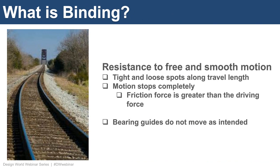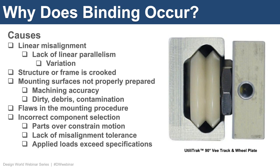So what is binding? Binding is any resistance to free and smooth motion. It can be experienced with tight and loose spots along the travel length, or the motion may stop completely. This happens when the friction force is greater than the driving force and the bearing guides do not move as intended. There are several different causes of why binding occurs. The number one reason is linear misalignment — the track is not very parallel when mounted. There can also be variation of the mounting surface over its length when the structure or frame is crooked.